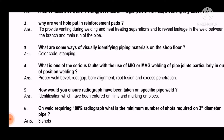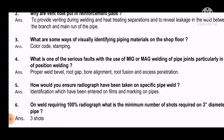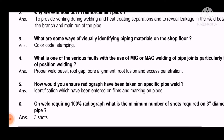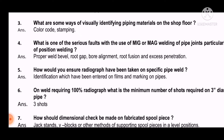Question 4: What is one of the serious faults with the use of MIG or MAG welding of pipe joints, particularly in out-of-position welding? The answer is: proper weld bevel, root gap, bore alignment, root fusion, and excess penetrations — these are the points we can explain to the interviewer.